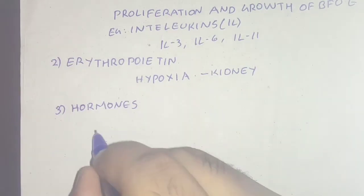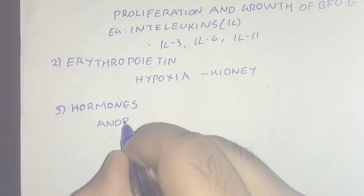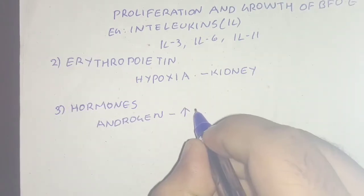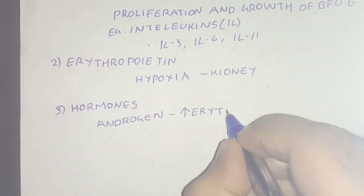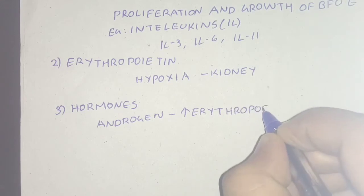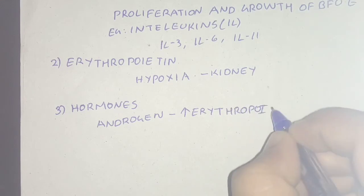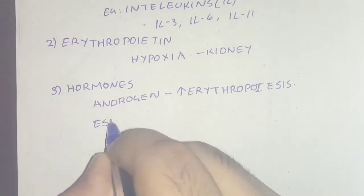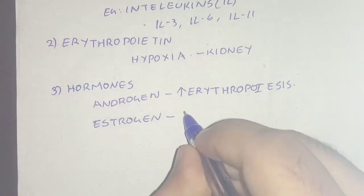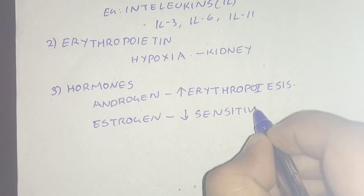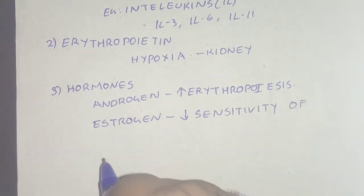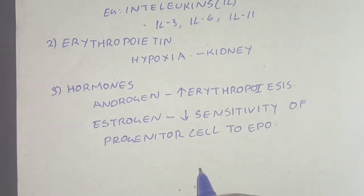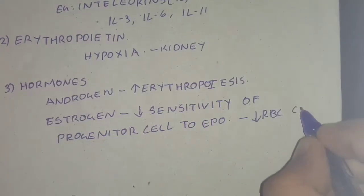The next factor is hormones affecting erythropoiesis. The first is androgen, which increases EPO secretion. This is the reason for the increased RBC count in adult males compared to females. Estrogen decreases the sensitivity of progenitor cells to EPO and decreases the RBC count.